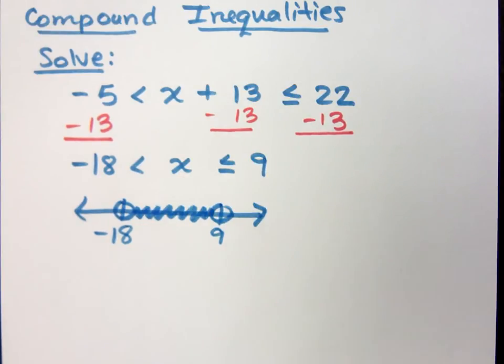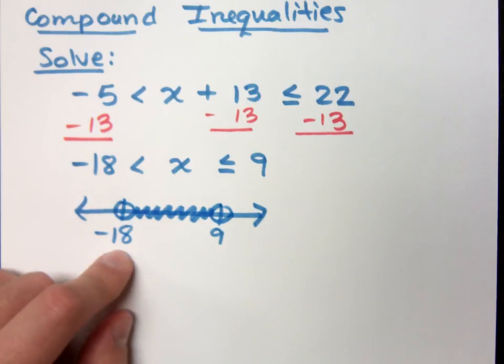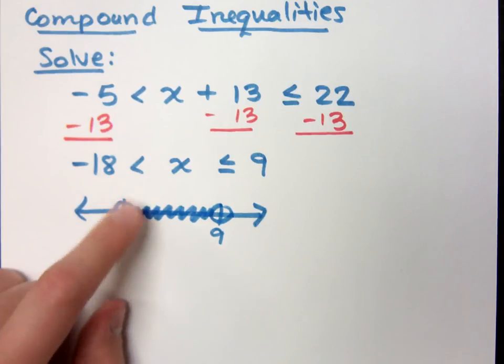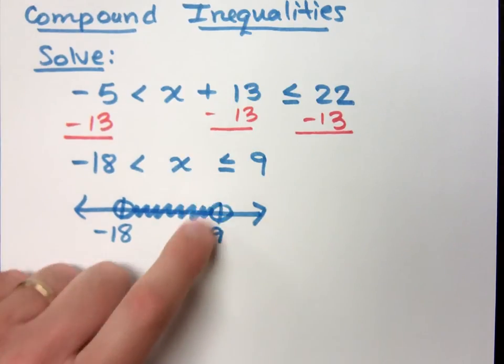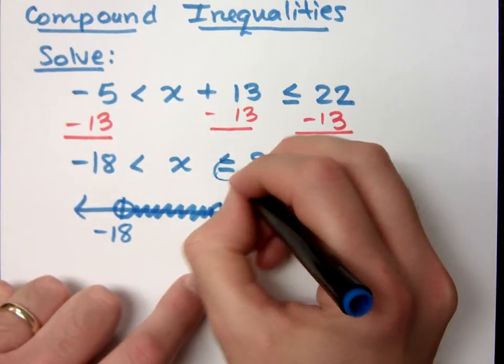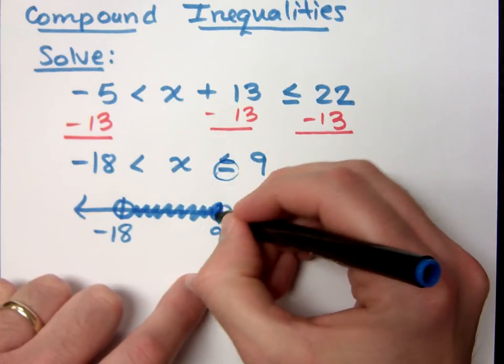But here's another question for you, though. Is negative 18 included? Since this is just a less than but not equal to, it stays open. But since this is less than or equal to, this equal to part right here means that I do get to have that filled in.